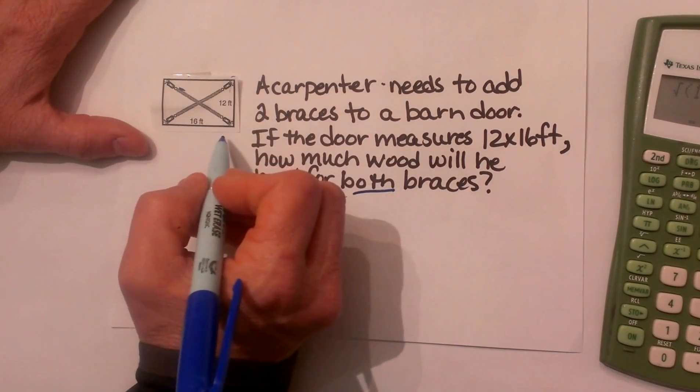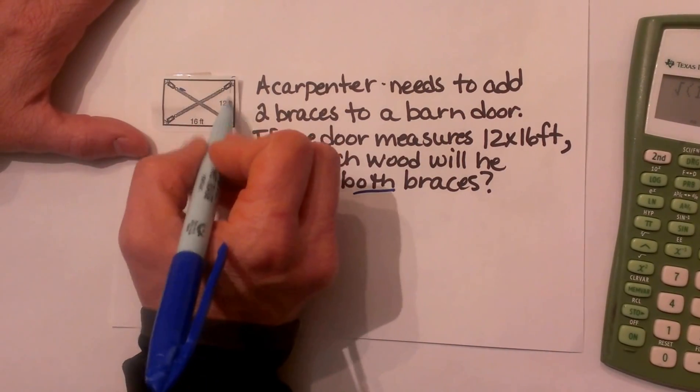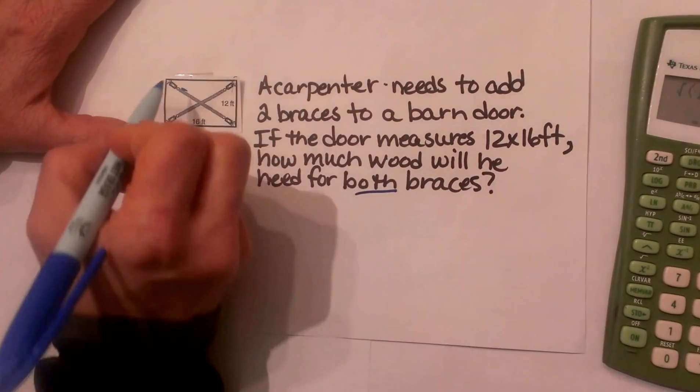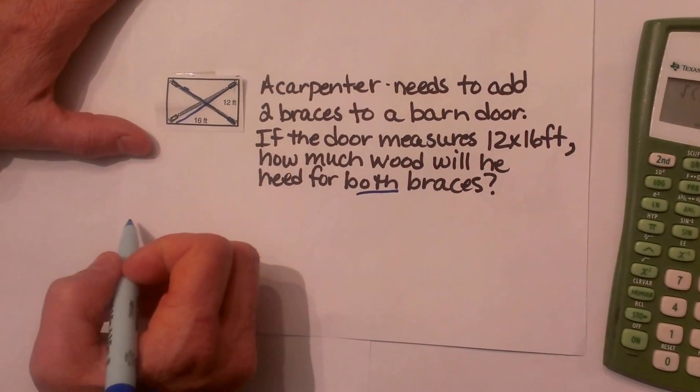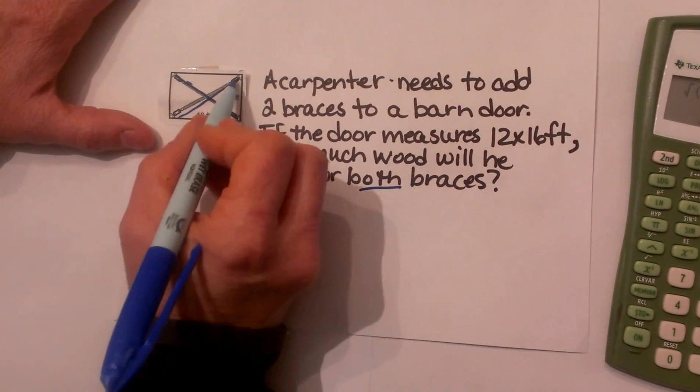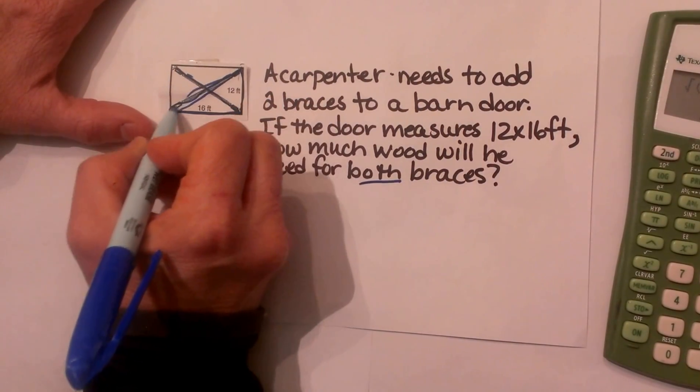So we already have our diagram and here is the barn door and it is 12 feet high and 16 feet wide so the braces go diagonally across. Well this looks more like a rectangle but what I am going to do is I am actually going to pull a triangle out of here.